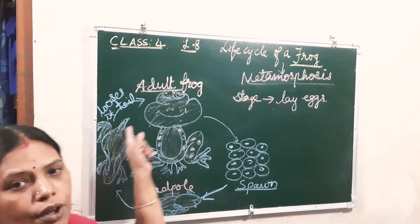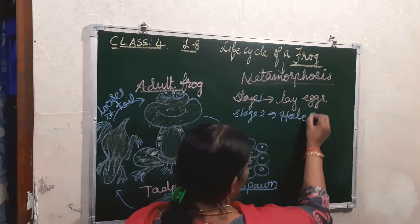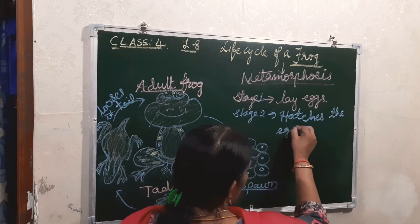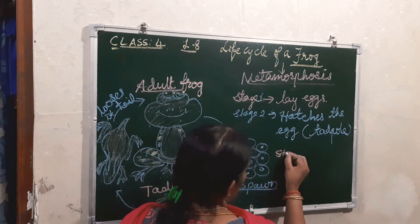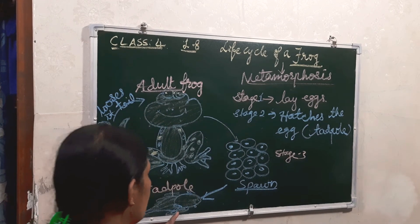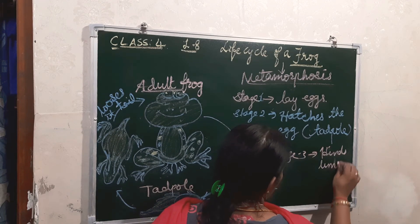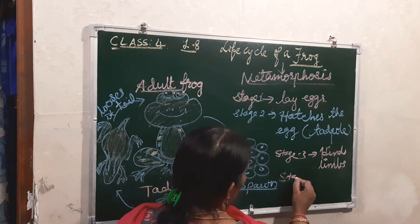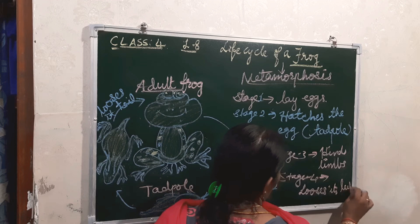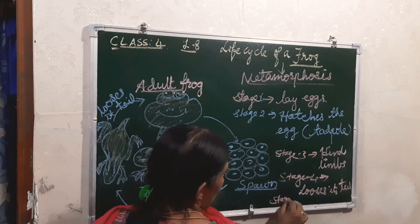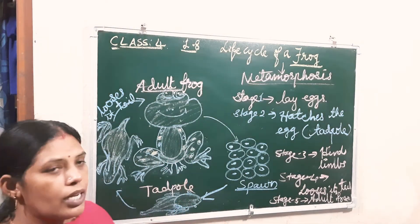This is the life cycle of the frog. Stage 1: lay the eggs. Stage 2: the egg hatches — breaking the egg — and the larva, which is the tadpole, comes out. Stage 3: the hind limbs grow. Stage 4: it loses its tail. Stage 5: it becomes an adult frog. Those are the stages of the life cycle of the frog.